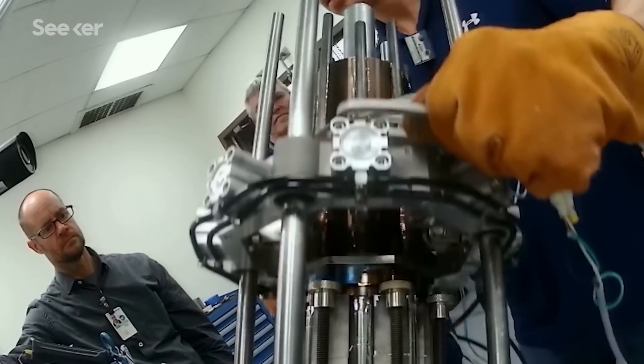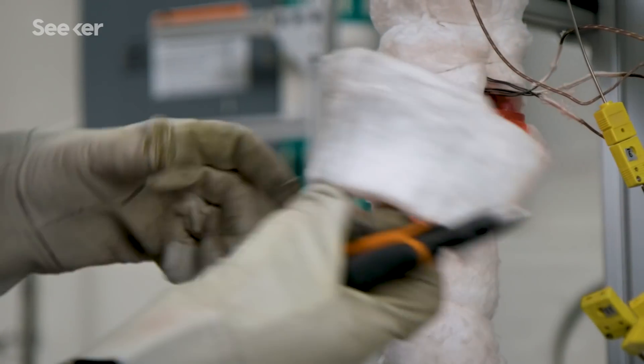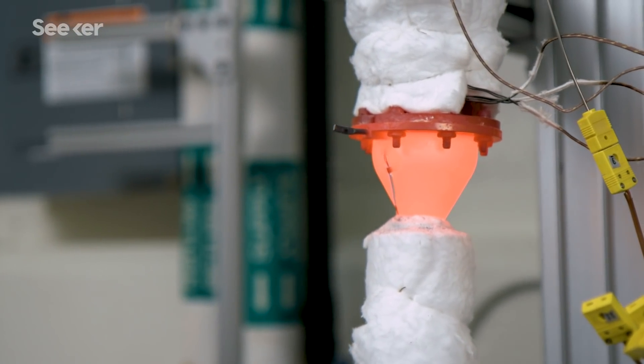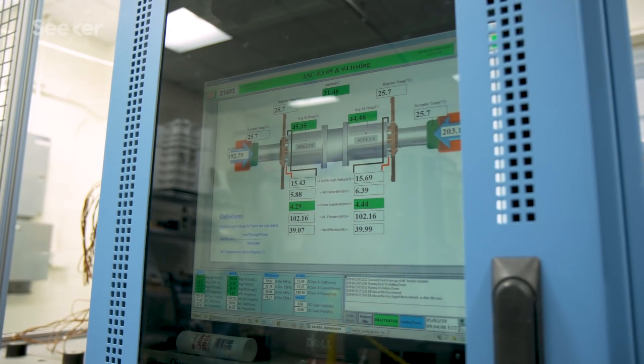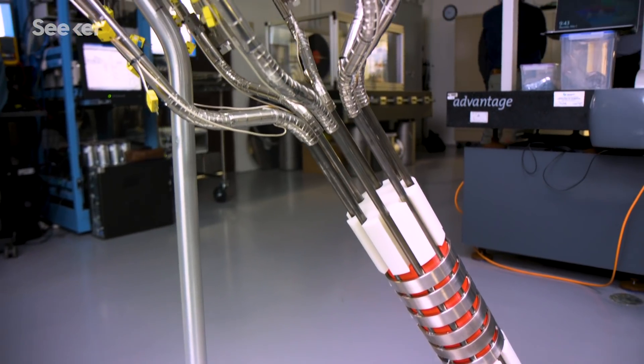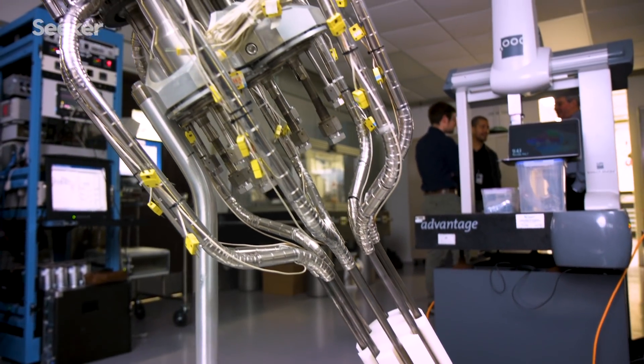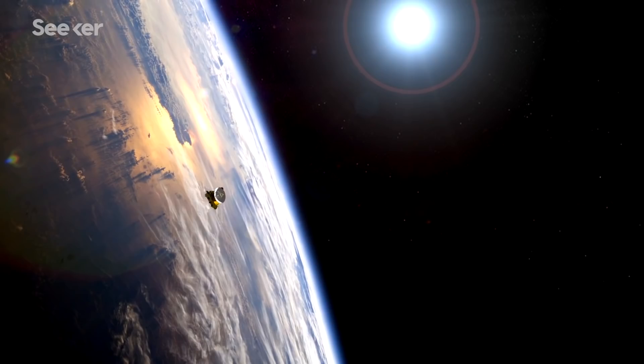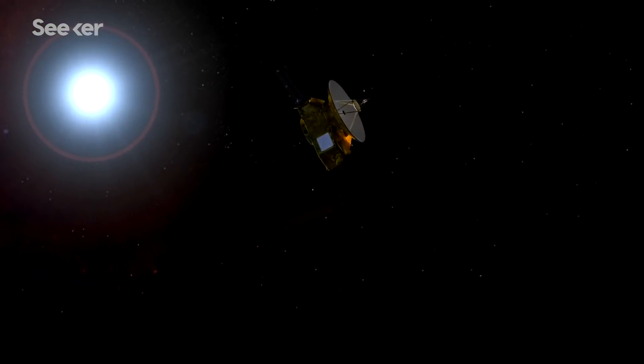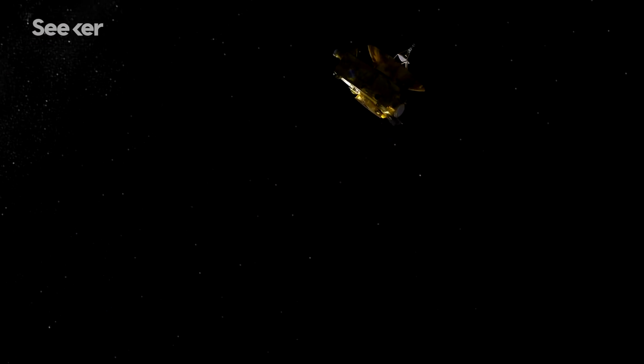But we start with that high-enriched core. The splitting of the atoms generates that heat that we need at the right power levels, at the right temperature levels, and then we transfer that heat up to the power conversion system. And then you convert that to electricity at that engine, reject some of the waste heat, and then use electricity for whatever you're trying to power, whether it's a coffee maker or a very expensive instrument for science.